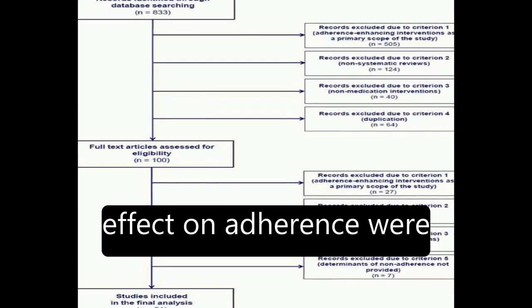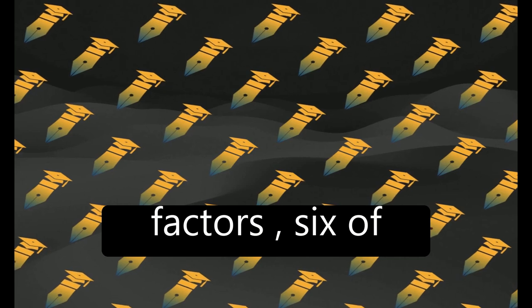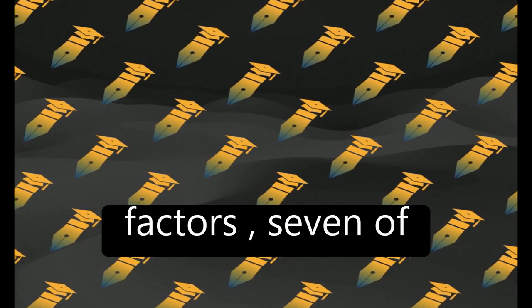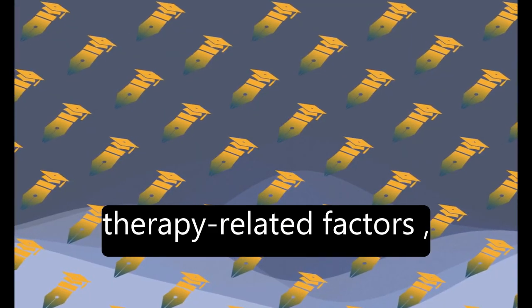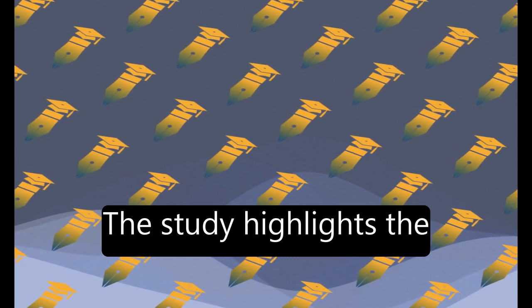Factors with unambiguous effect on adherence were grouped into eight clusters of socioeconomic-related factors, six of healthcare team and system-related factors, six of condition-related factors, seven of therapy-related factors, and 14 of patient-related factors.